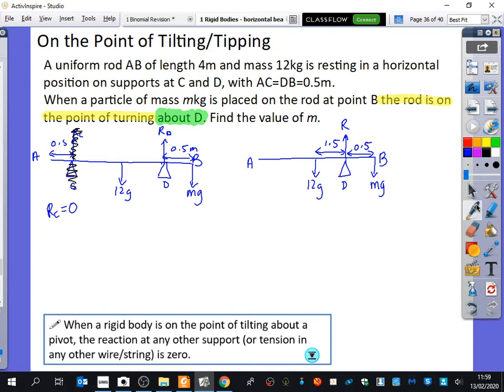I want to find out the value of M. What am I going to do to find out the value of M? Best strategy, please. Moments about D. No. Moments about D. Good. Moments about D is the best strategy because if I take moments about D, I won't use R.